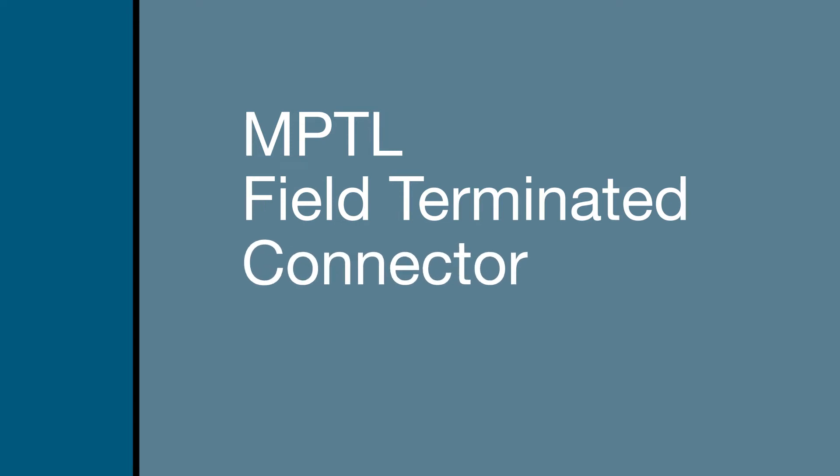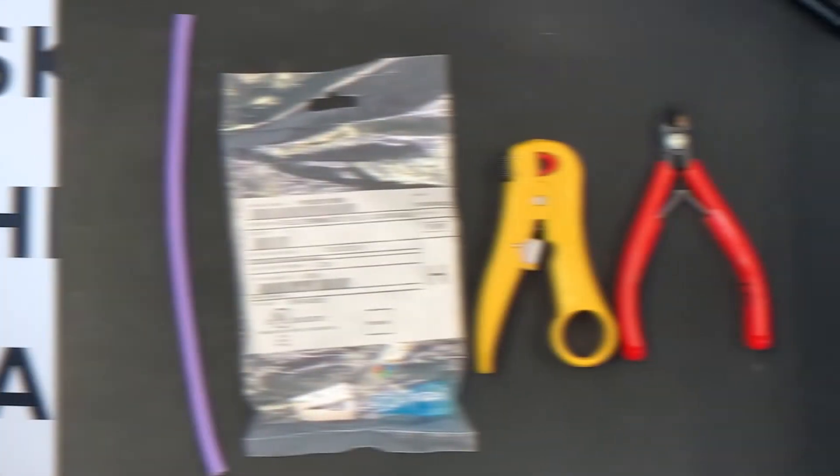In this video we are going to have a look at the termination process for the field terminated connector, better known as the MPTL connector. With this you can connect directly into a building device, such as a Wi-Fi or a camera and still have your site warranted for 25 years.